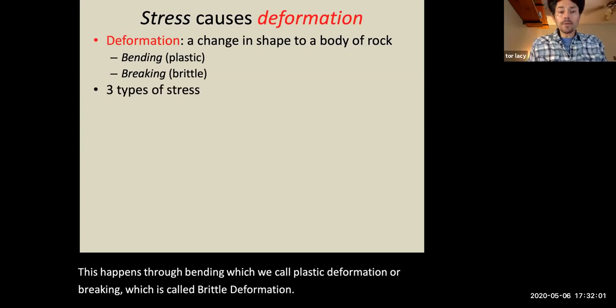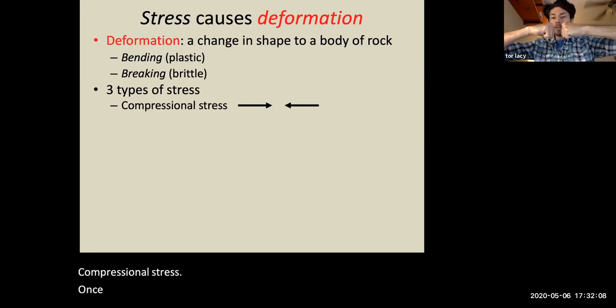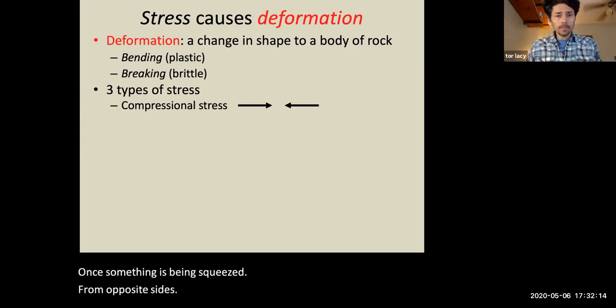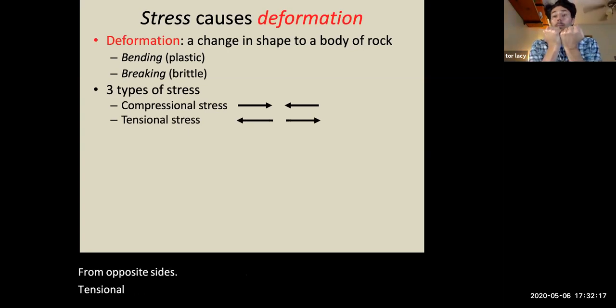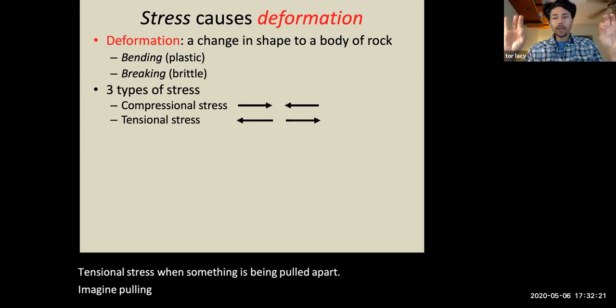Three types of stress due to bending and breaking. Compressional stress, when something is being squeezed together from opposite sides. Tensional stress, when something is being pulled apart. Imagine pulling a rubber band. You are applying tensional stress to that rubber band.